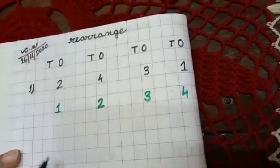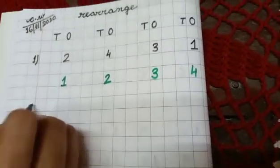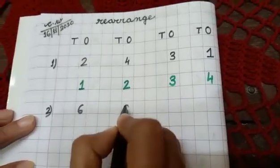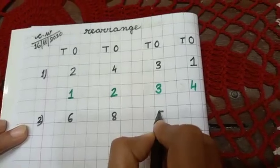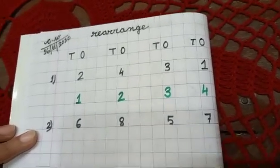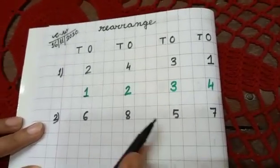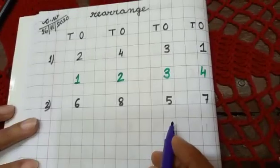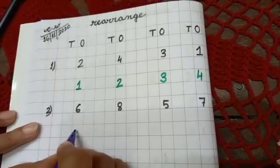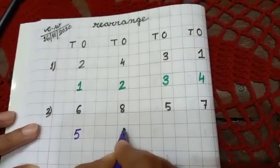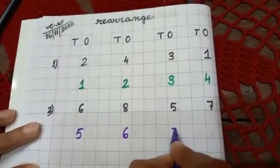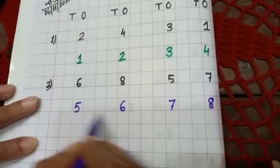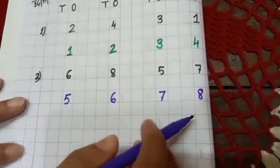Now next number. Number 2 is. Here I am writing 6, 8, 5, 7. Now rearrange. So which one will come first? 5. Then 6. Then which one will come? 7. Next. 8. 5, 6, 7, 8. Okay.